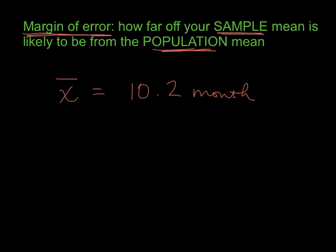So I surveyed a group of babies and I discovered that the sample mean was 10.2 months for when they took their first steps. And then if I was given a margin of error, which we use as E, of 1.2 months,